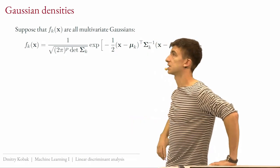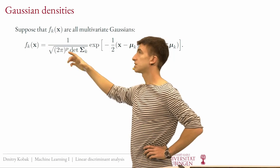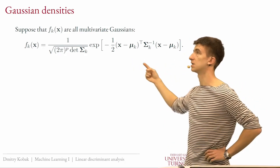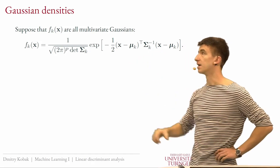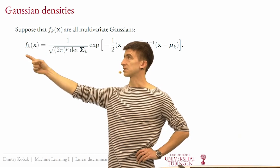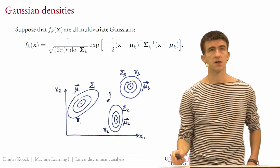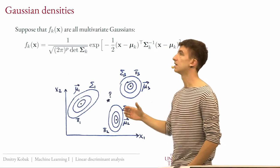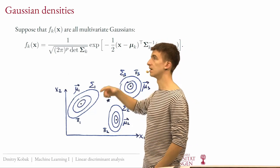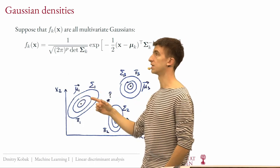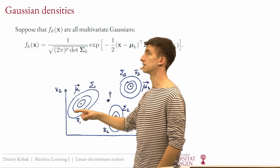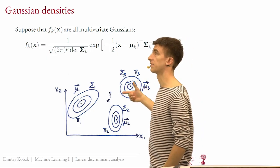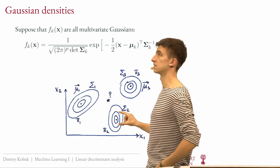This is the probability density of a multivariate Gaussian. I'll use p for the dimensionality of predictors. The factor in front is a normalization constant, and the more interesting objects are the mean μ and the covariance matrix Σ. We can have a separate Gaussian for each class, which is why they're indexed by k. For example, imagine two predictors x1 and x2 and three classes where we know the true parameters of all Gaussians.